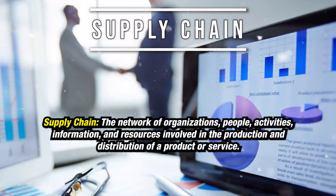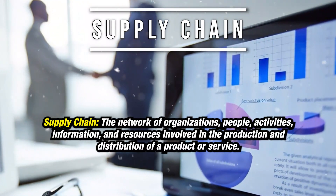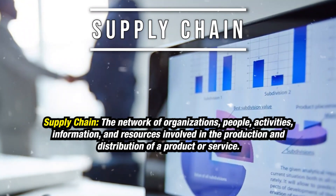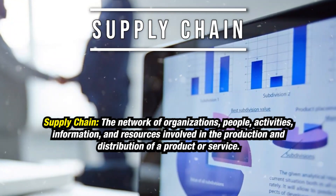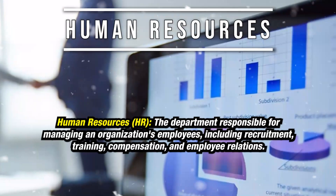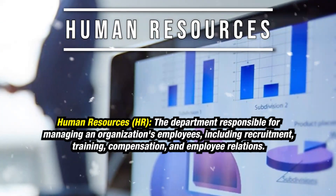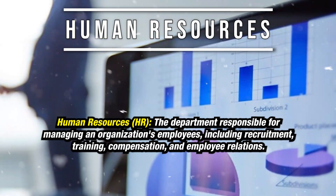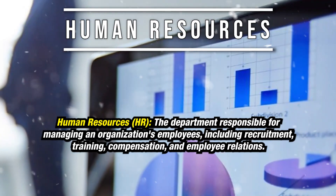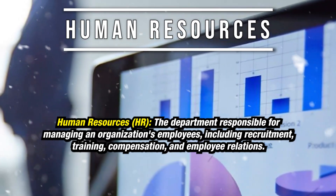Supply chain: the network of organizations, people, activities, information, and resources involved in the production and distribution of a product or service. Human resources, HR: the department responsible for managing an organization's employees, including recruitment, training, compensation, and employee relations.